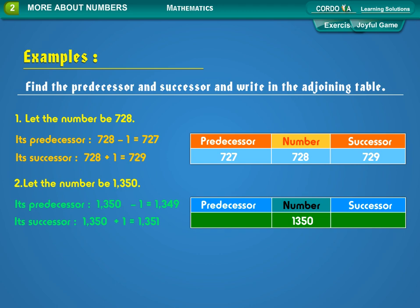Let the number be 1,350. Its predecessor: 1,350 minus 1 equals 1,349. Its successor equals 1,350 plus 1 equals 1,351.